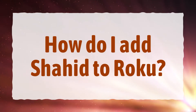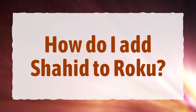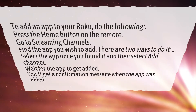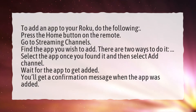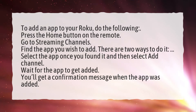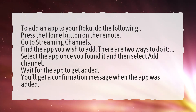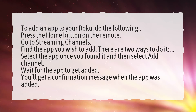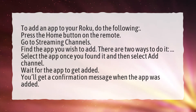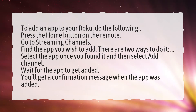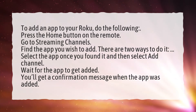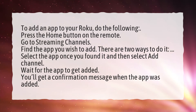How do I add an app to Roku? To add an app to your Roku, do the following: Press the home button on the remote. Go to streaming channels. Find the app you wish to add. There are two ways to do it. Select the app once you found it and then select add channel. Wait for the app to get added. You'll get a confirmation message when the app was added.